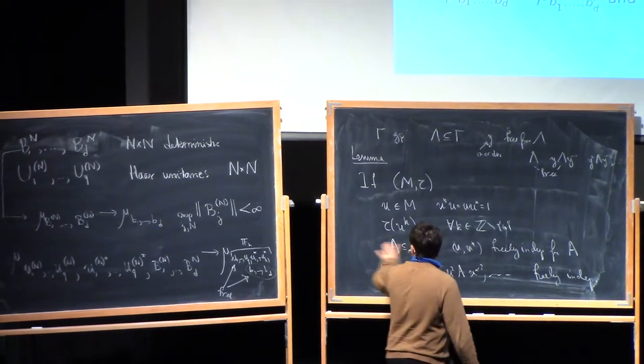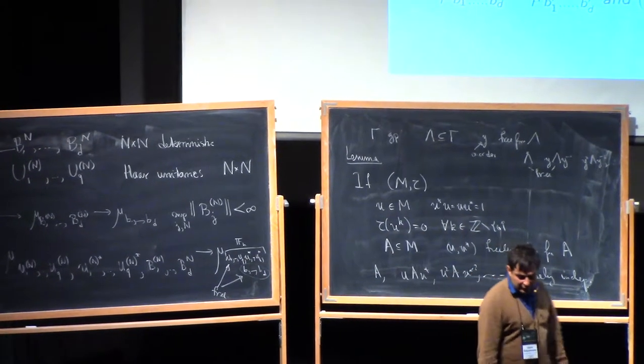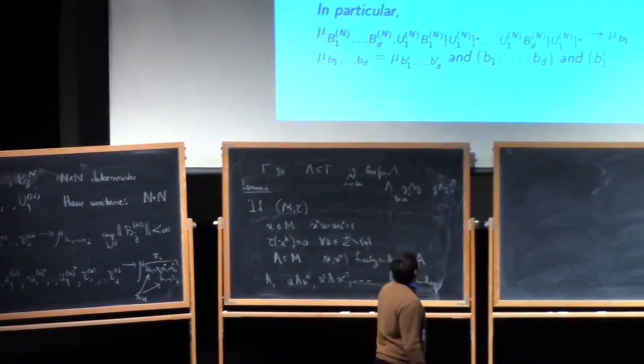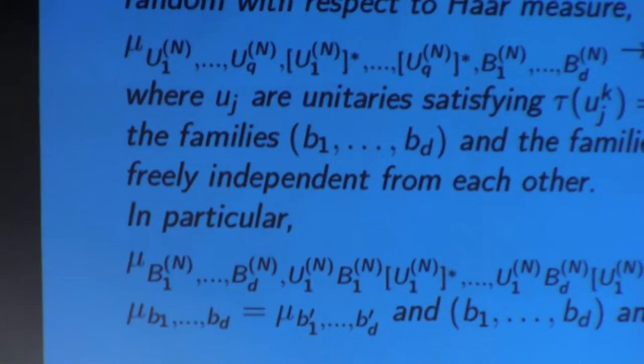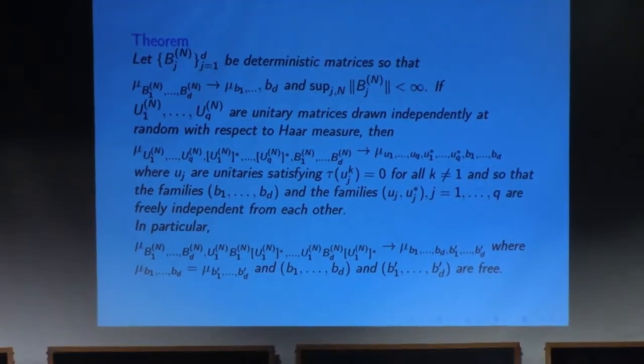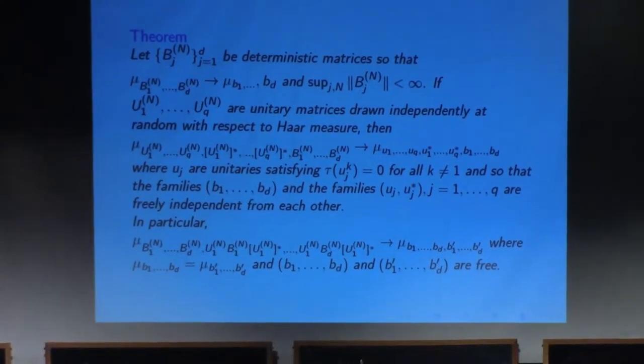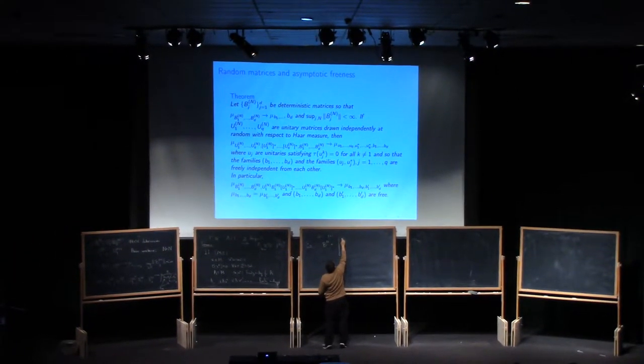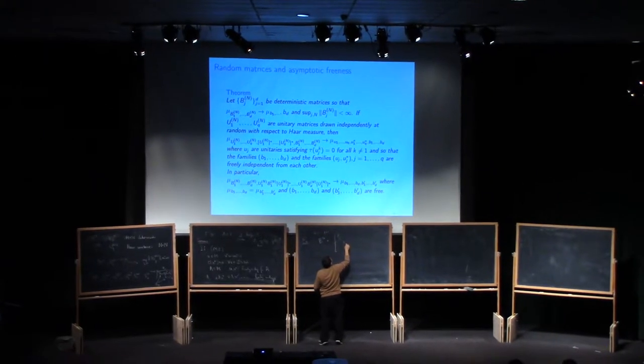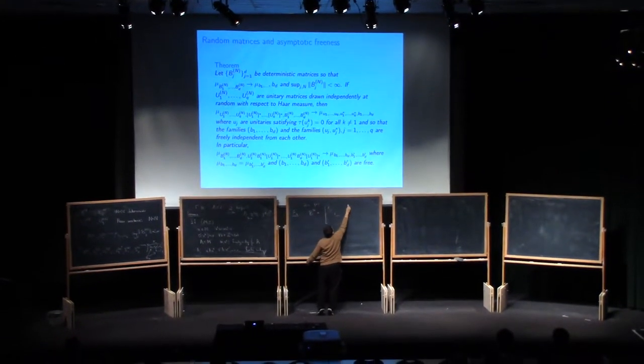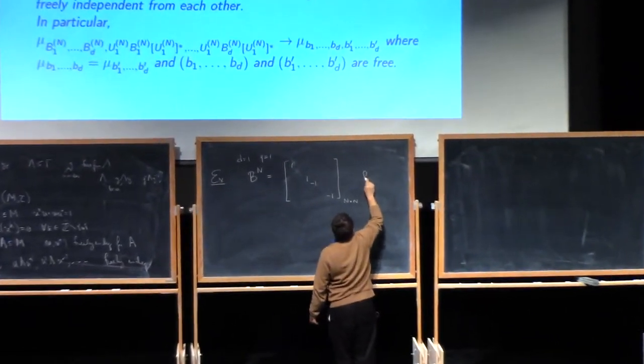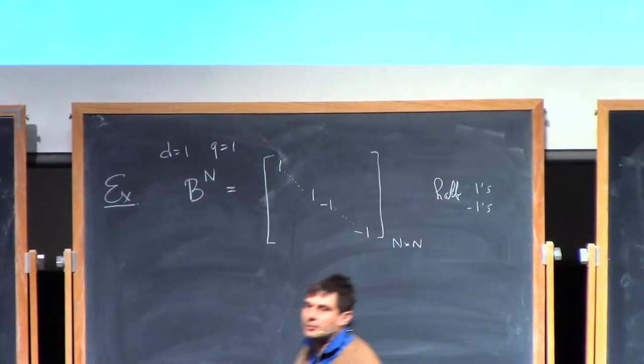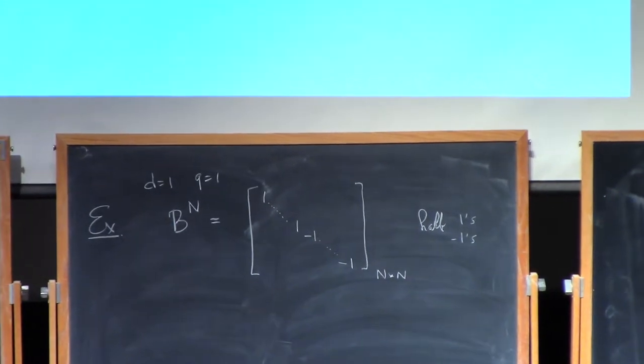So if you use this in conjunction with that theorem, here's one thing that you can deduce. Let me maybe do an example. If I take a single b_n, so I will take d equals 1, q equals 1. I take a single b_n, and as my b_n I will simply take the matrix with lots of ones and lots of minus ones. So it will be an n by n matrix and half ones and half minus ones.